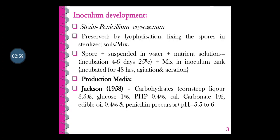As far as inoculum development is concerned, the strain used is Penicillium chrysogenum. The selected strain is maintained as a master culture and preserved by lyophilization or by mixing spores in sterilized soils. For inoculum preparation, spores from working solid cultures are suspended in water and added to flasks containing nutrient solution, incubated for 4 to 6 days at 25 degrees Celsius. The resulting spores are used to inoculate the inoculum tank, which is incubated for 48 hours with agitation and aeration to grow more mycelium. The resulting inoculum is used for the production tank or transferred to a second or third stage inoculum tank for large-scale production.